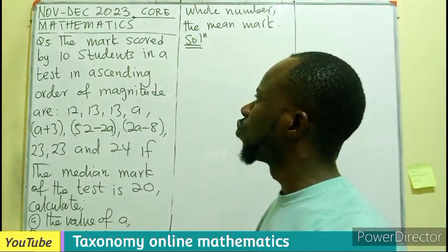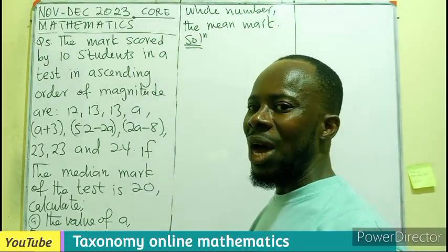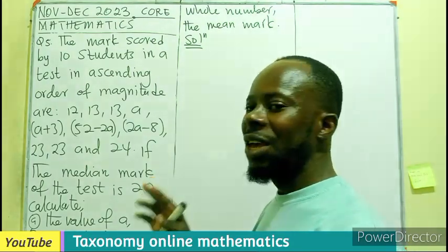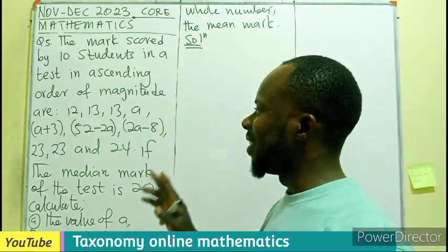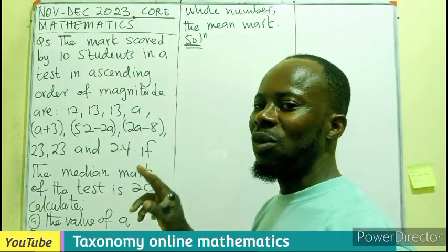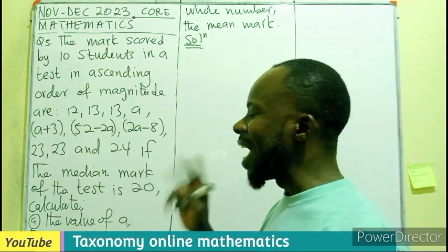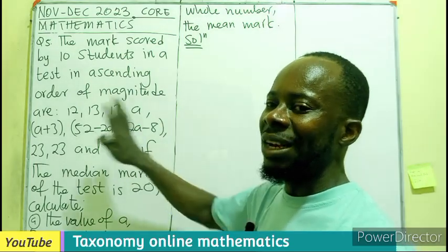The marks scored by 10 students in a test in ascending order of magnitude are given as 12, 13, 13, A, A plus 3, 52 minus 2A, 2A minus 8, 23, 23, and 24. These are the 10 scores.